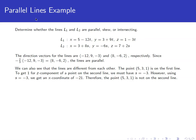So the lines we're given are: the first line is x equals 5 minus 12t, y equals 3 plus 9t, and z equals 1 minus 3t. The second line is x equals 3 plus 8s, y equals negative 6s, and z equals 7 plus 2s.